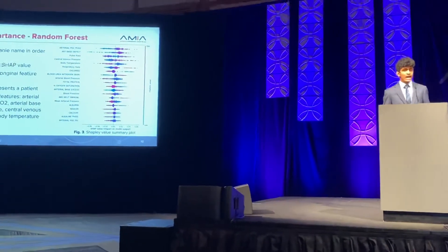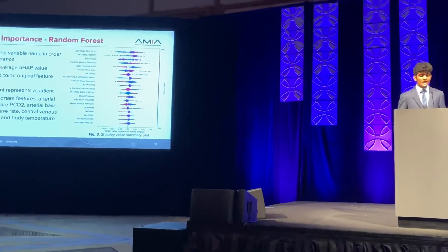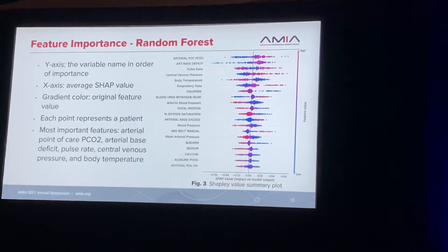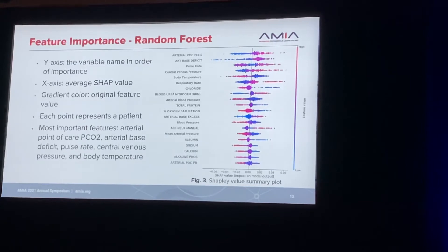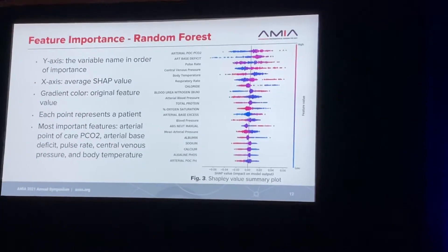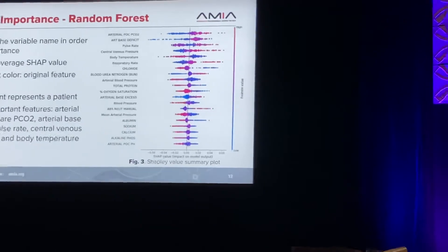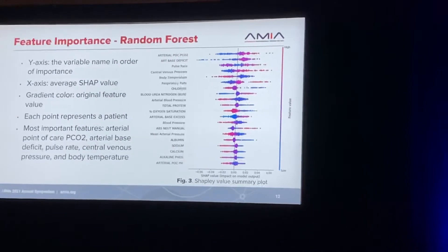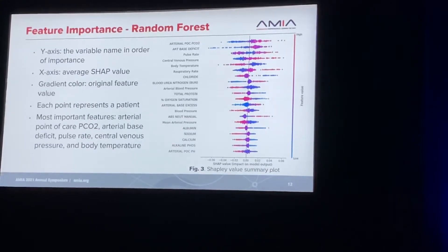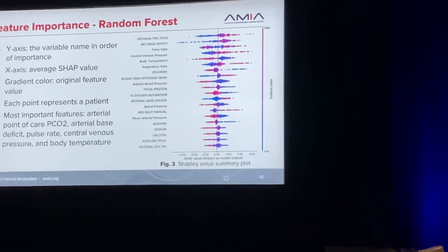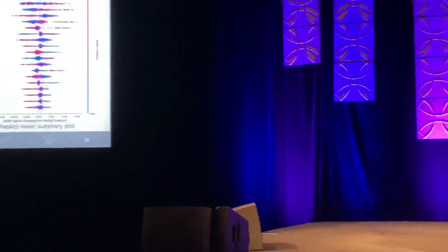Here is the SHAP feature importance plot for the random forest model. The y-axis shows variable name and order of importance — the top 20 features that drove the model's predictions. The x-axis shows the average SHAP value. The graded color from high to low shows the original feature value, and each point represents a patient from the dataset. The most important features were arterial point-of-care PCO2, arterial base deficit, pulse rate, central venous pressure, and body temperature. This plot allows a doctor without access to the model to correlate a patient's data to the graph and determine whether a patient is likely to be readmitted.